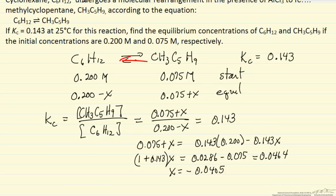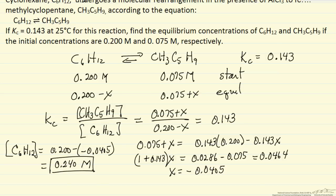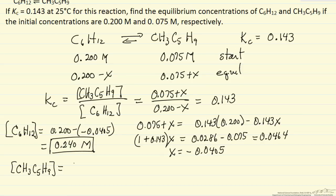That just means that to approach equilibrium, some of the products form reactants. So the concentration of cyclohexane is 0.200 minus, minus 0.0405 - that's the concentration of cyclohexane. Likewise, concentration of methyl cyclopentane, here's the concentration of methyl cyclopentane at equilibrium. This is what the objective of this problem was: to determine concentrations as the system went to equilibrium.